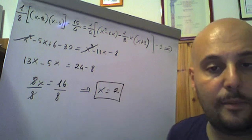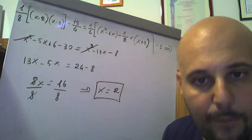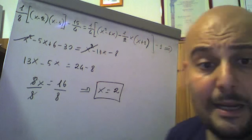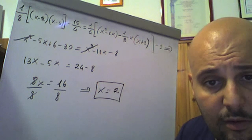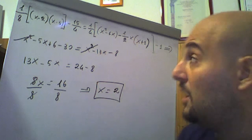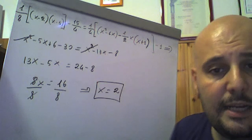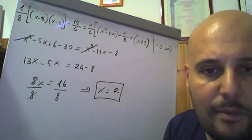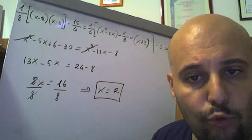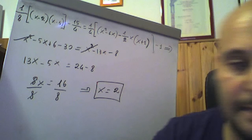Non faccio la verifica per motivi di tempo. Se volete fare la verifica, prendete x=2, lo sostituite ad ogni x presente e vi verranno due numeri uguali sia nel membro di sinistra che nel membro di destra.